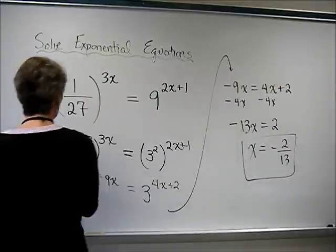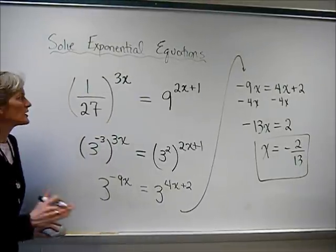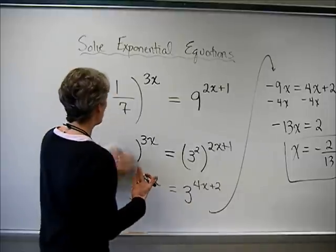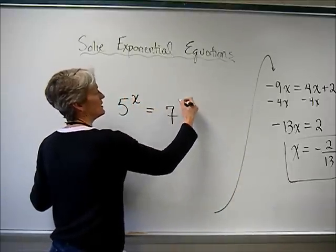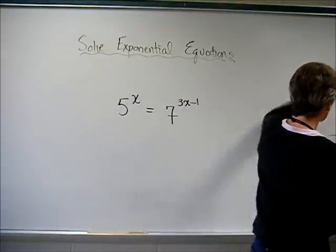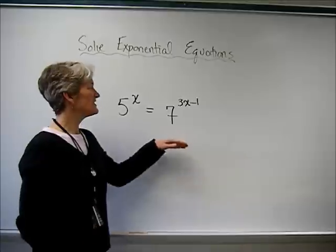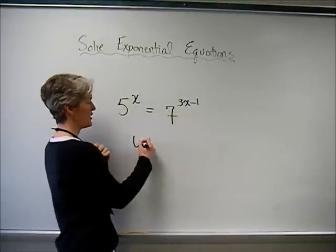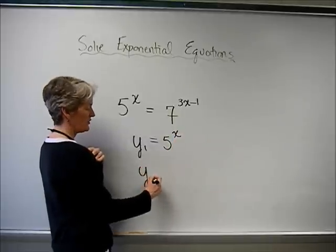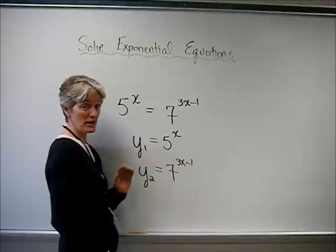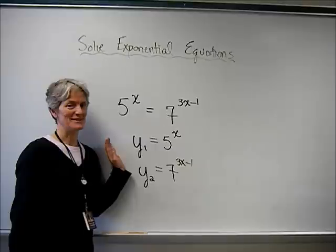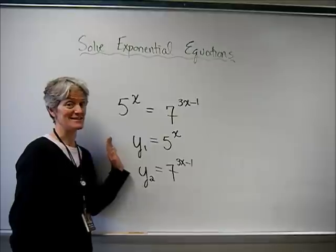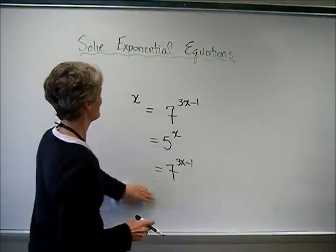So this is one strategy, as you already said. This is clearly a strategy that only works when your bases are nice. If, for example, I had something like 5 to the x equals 7 to the 3x minus 1, something like that. Well, clearly, I cannot use this strategy. I could come up with a decimal approximation by graphing to solve, which we've talked about. But soon, you're going to learn another strategy to solve absolutely any exponential equation using logarithms. That's when this one really begins. Thanks, Ms. Stewart. Thank you, Mr. Haas.